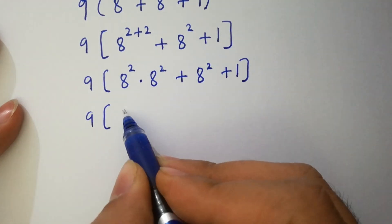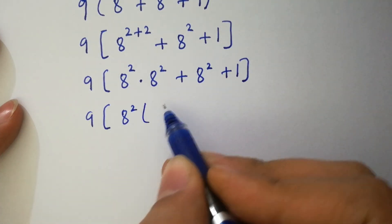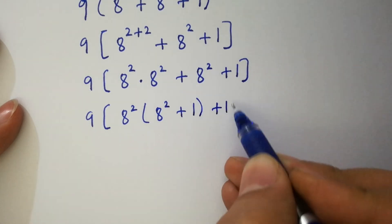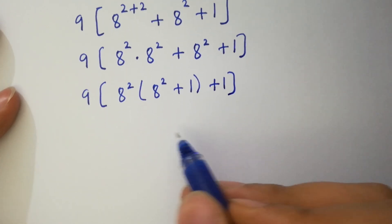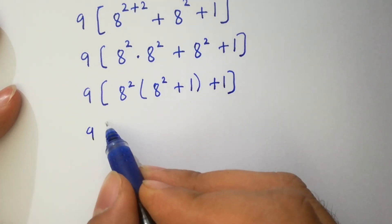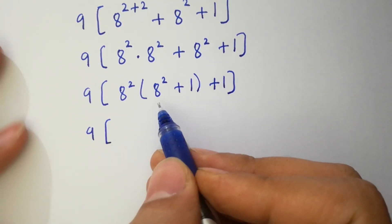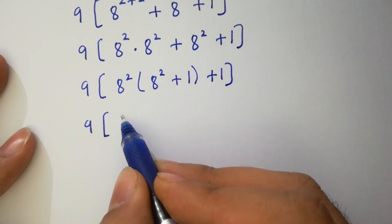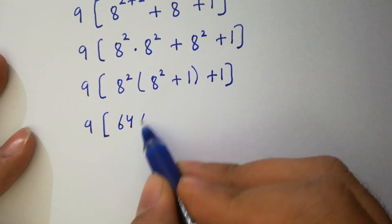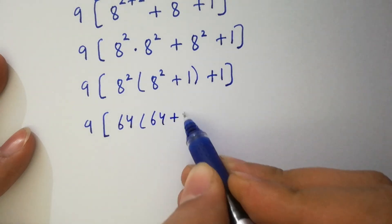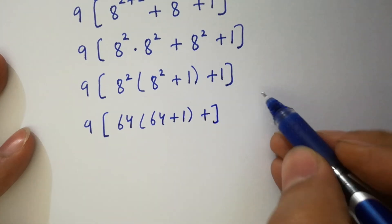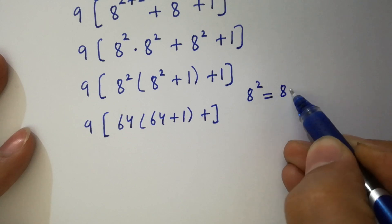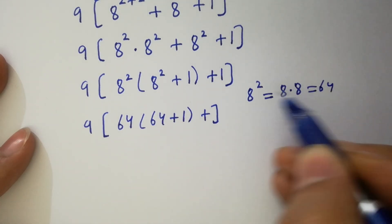Here, 8 squared can be factored out. We have 8 squared times (8 squared plus 1), plus 1. Next, 8 squared equals 64, so we have 64 times (64 plus 1) plus 1. Since 8 squared equals 8 times 8, which equals 64.